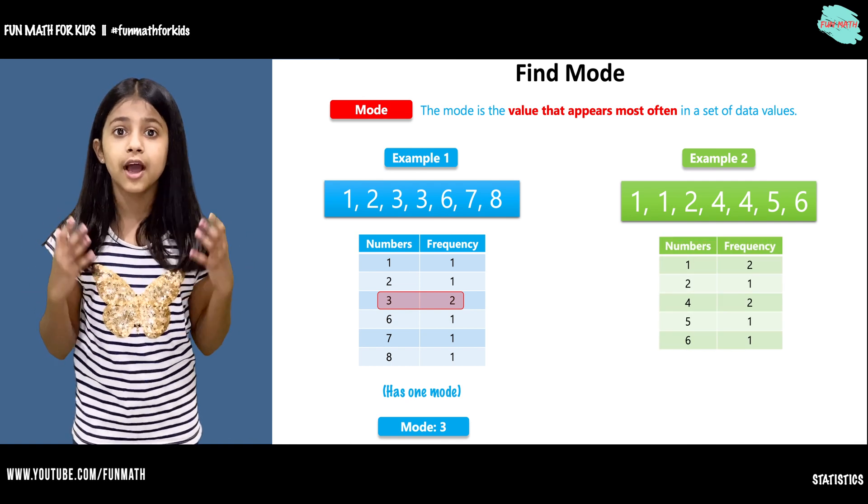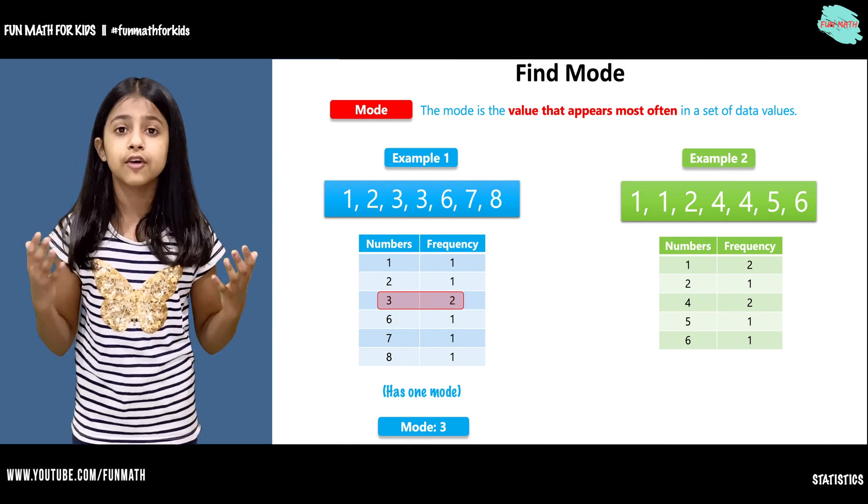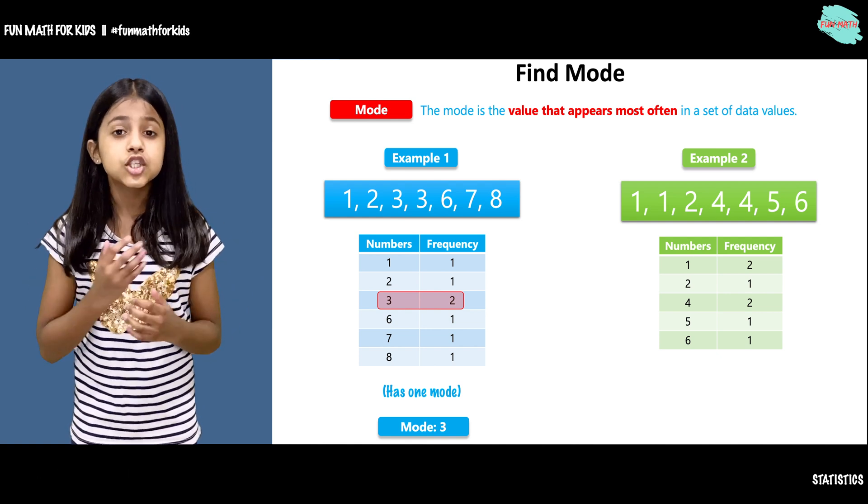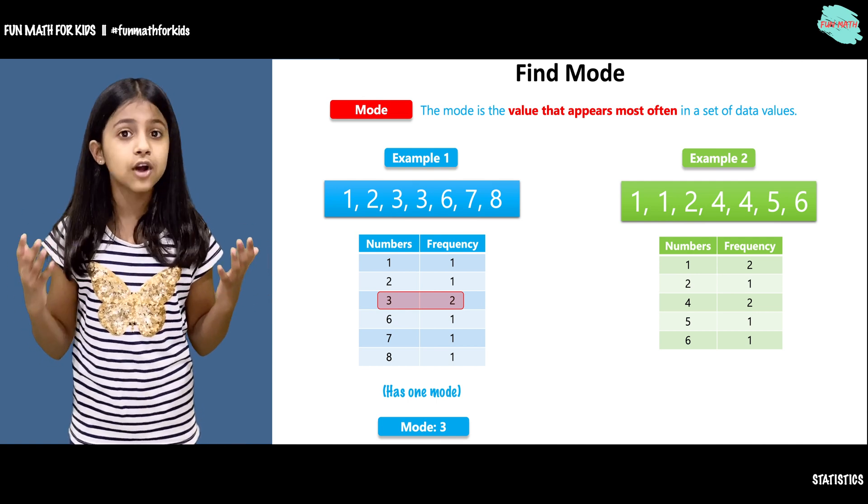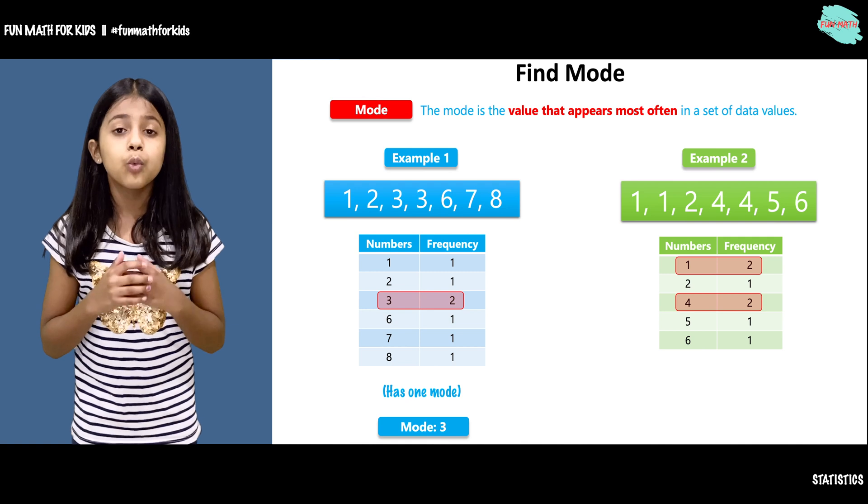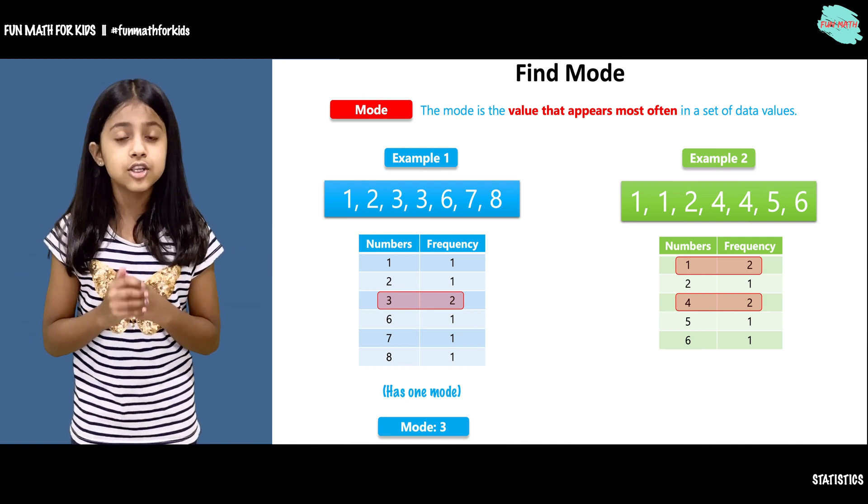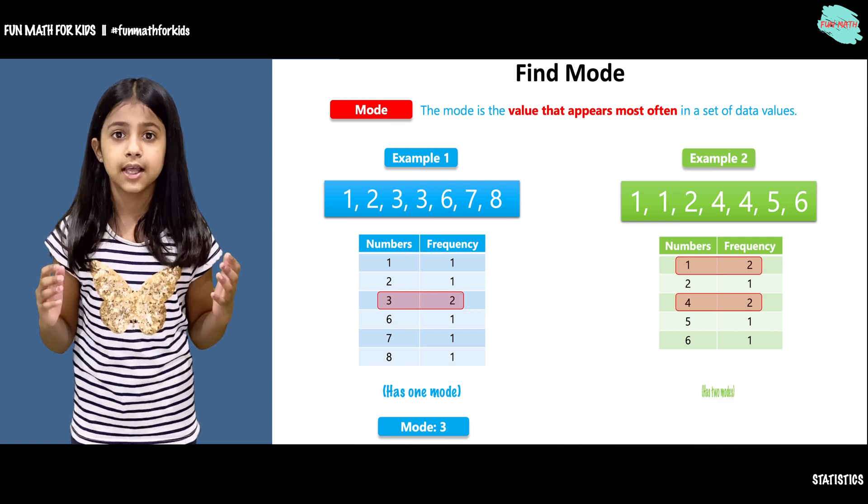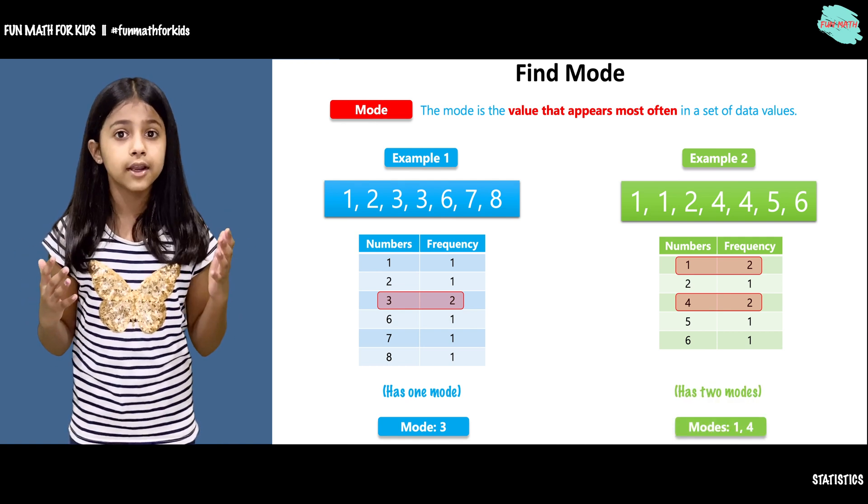1 and 4 have appeared twice. 2, 5, and 6 have appeared once. So what is the mode here? The mode is the value that appears most often in the data set. 1 and 4 have appeared most often in the data set. That is why this data set has 2 modes, and those are 1 and 4.